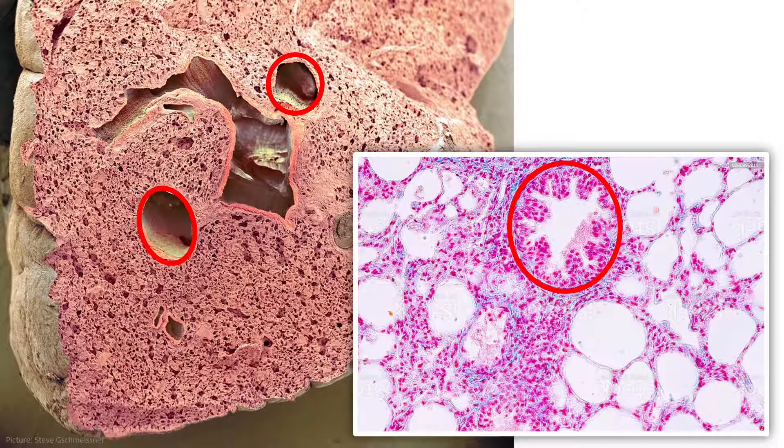We can also see the spongy alveoli packed in at the ends of every branch of the airway. Alveoli are wrapped in capillary beds and lined with super-thin cells through which gas exchange takes place.